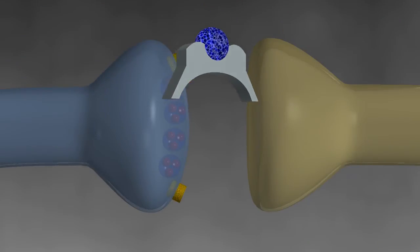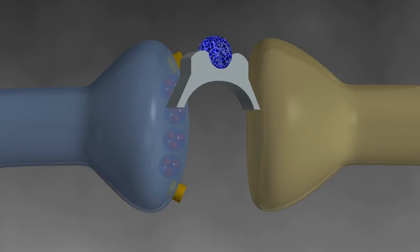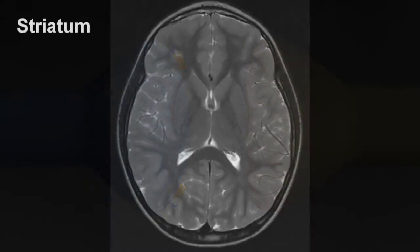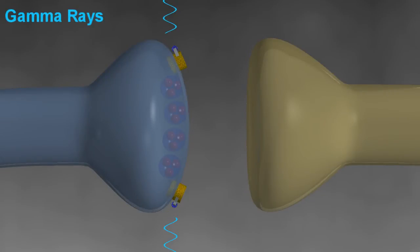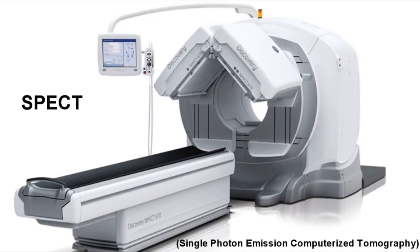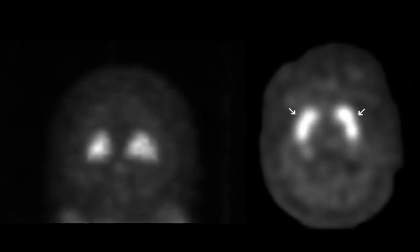The agent used in DAT scanning is called ioflupane, which has a base unit bound to the radioisotope I-123. Ioflupane crosses the blood-brain barrier and attaches to the presynaptic dopamine transport apparatus in the striatum. Once bound, the I-123 isotope emits gamma rays, which can be picked up by a SPECT — or single photon emission computerized tomography — camera. The camera determines the location and concentration of the activity and displays the information in 3D and cross-sectional formats. This is the 3D reconstruction of a normal DAT scan showing the concentration of dopaminergic cells in the striatum, and when displayed in reconstructed axial slices we can see the symmetric comma-shaped distribution of dopaminergic cells.